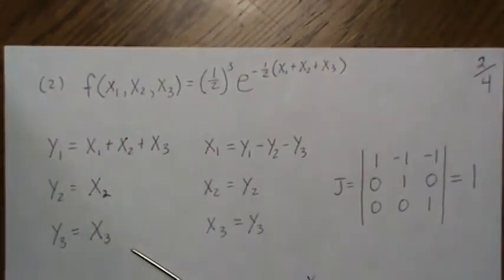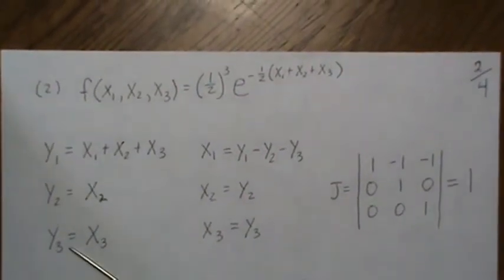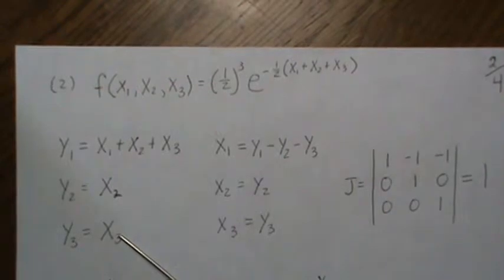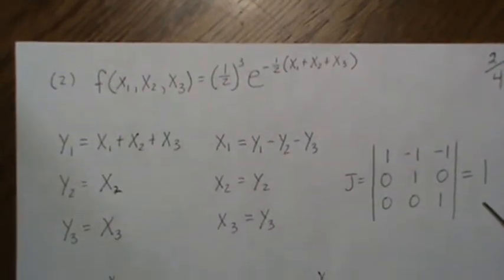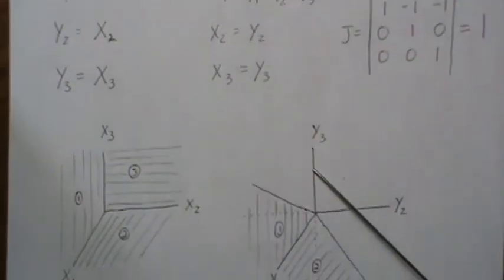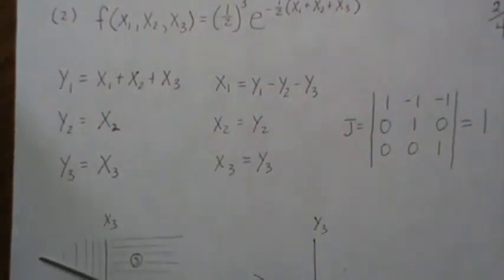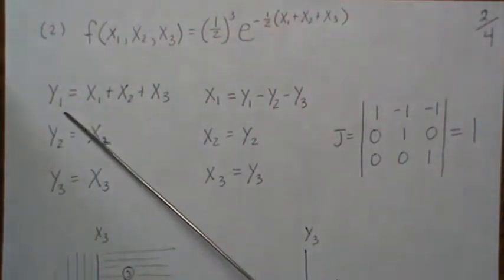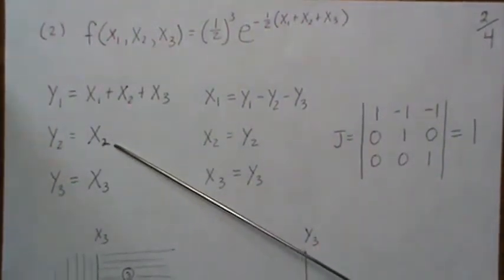Now let's look at the sum of three chi-squared random variables, which gives us this. Since we're going from R3 space we need to go to R3 space, so we introduce y2 and y3. Note that y2 has to be less than or equal to y1, and y3 has to be less than or equal to y1 — these can be the same.